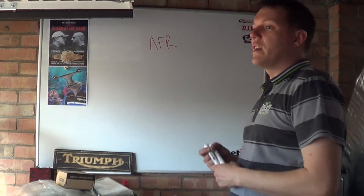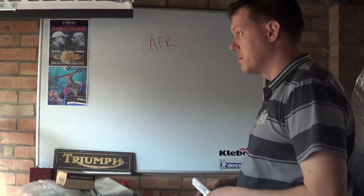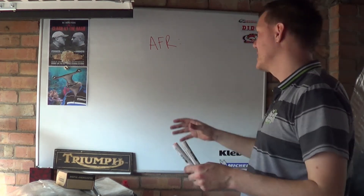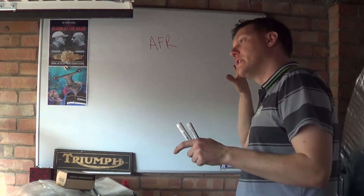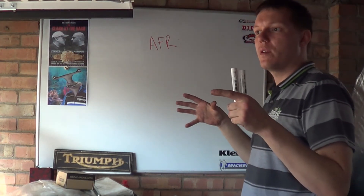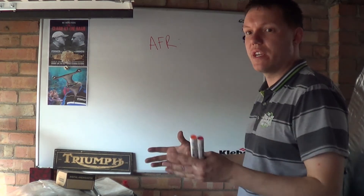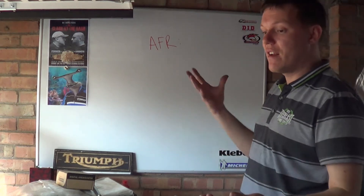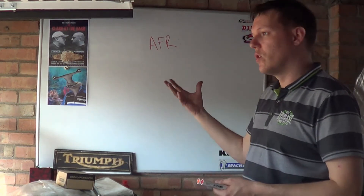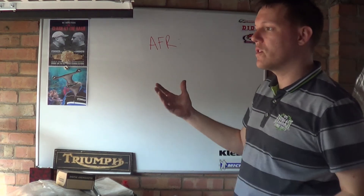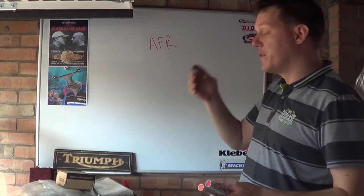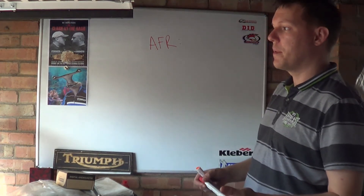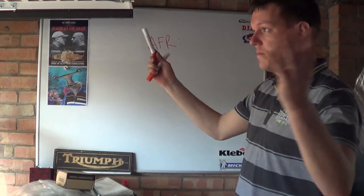You have your stoichiometric ratio — stupid word that it is — which basically means how much air do you need for your fuel to have a resulting complete combustion. Basically, how much air and fuel do you need so they combust completely, so there's no free oxygen and no free fuel. Free fuel is a problem because it ends up going out your exhaust pipe, which means your fuel efficiency drops.